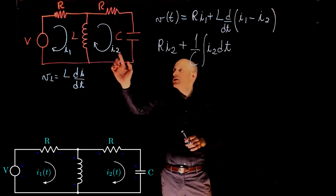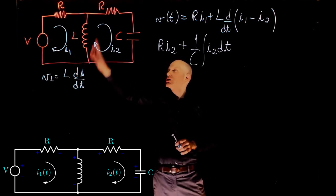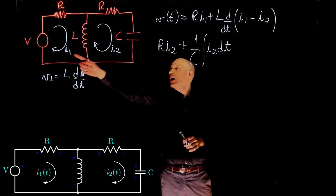If for this loop I2 is positive, you see that I1 is going in the opposite direction through the inductor. I2 goes up, I1 goes down, so I1 is now negative.